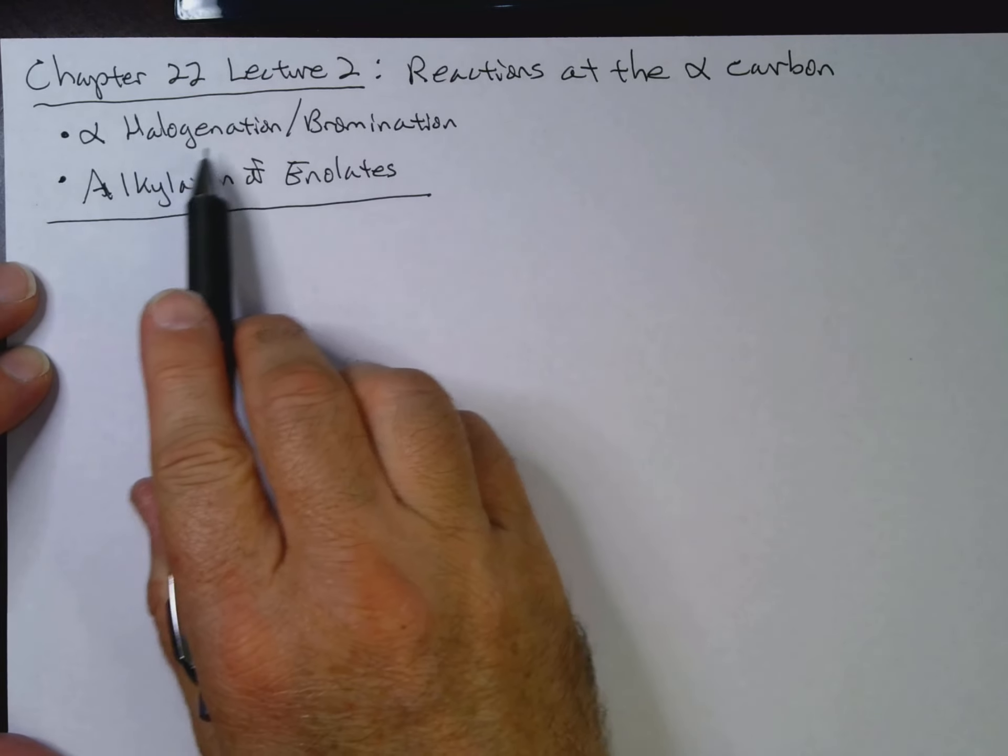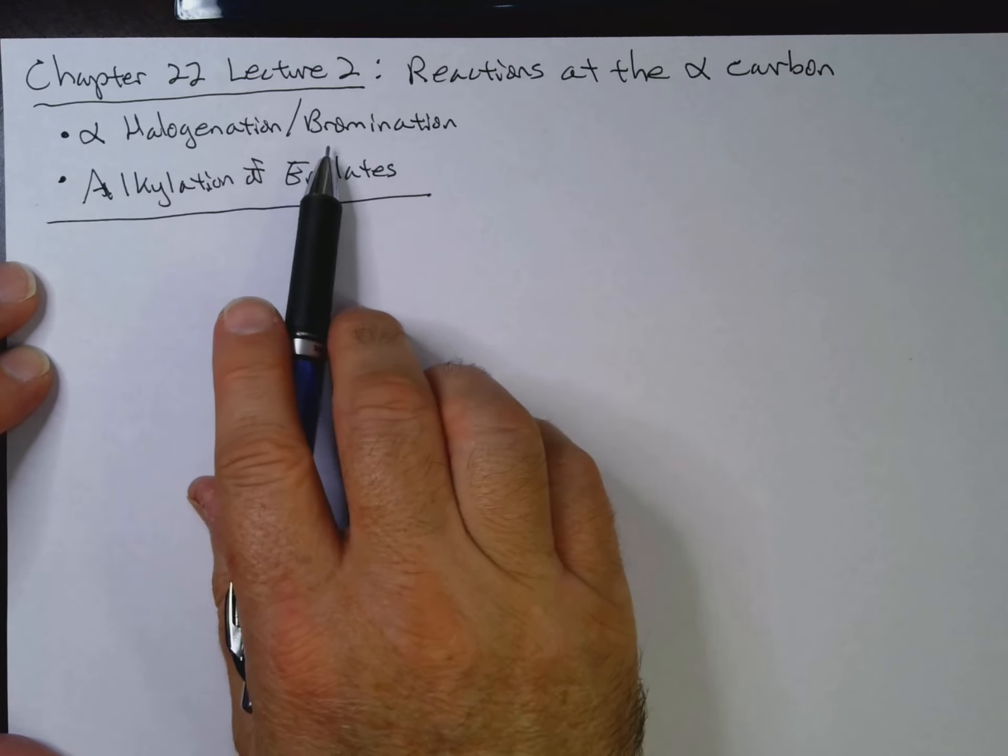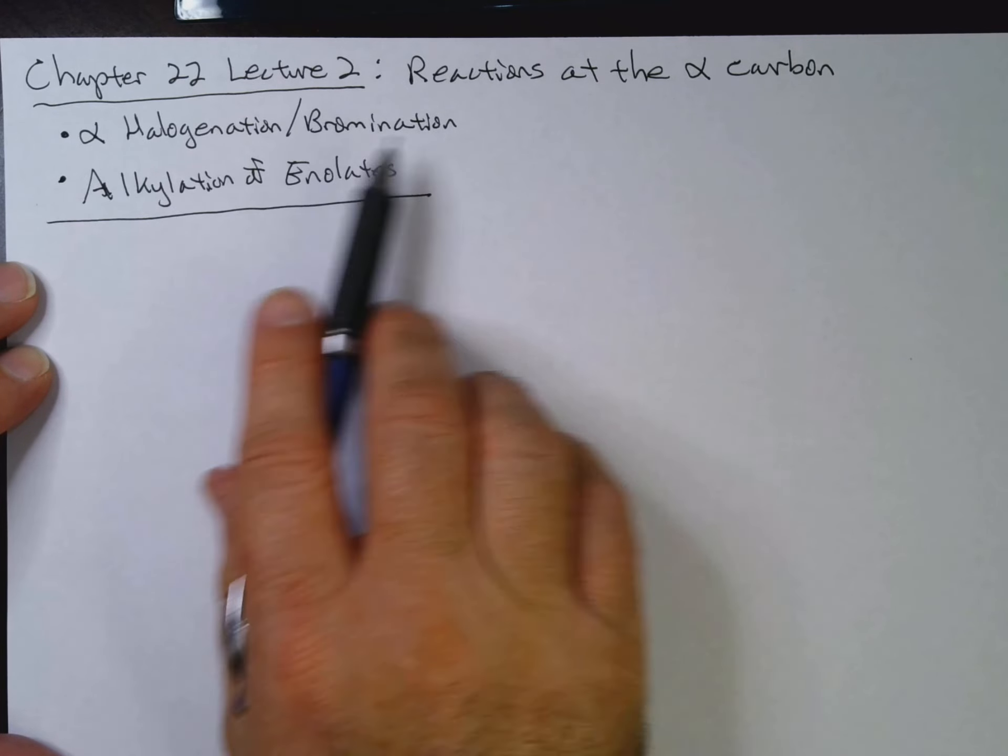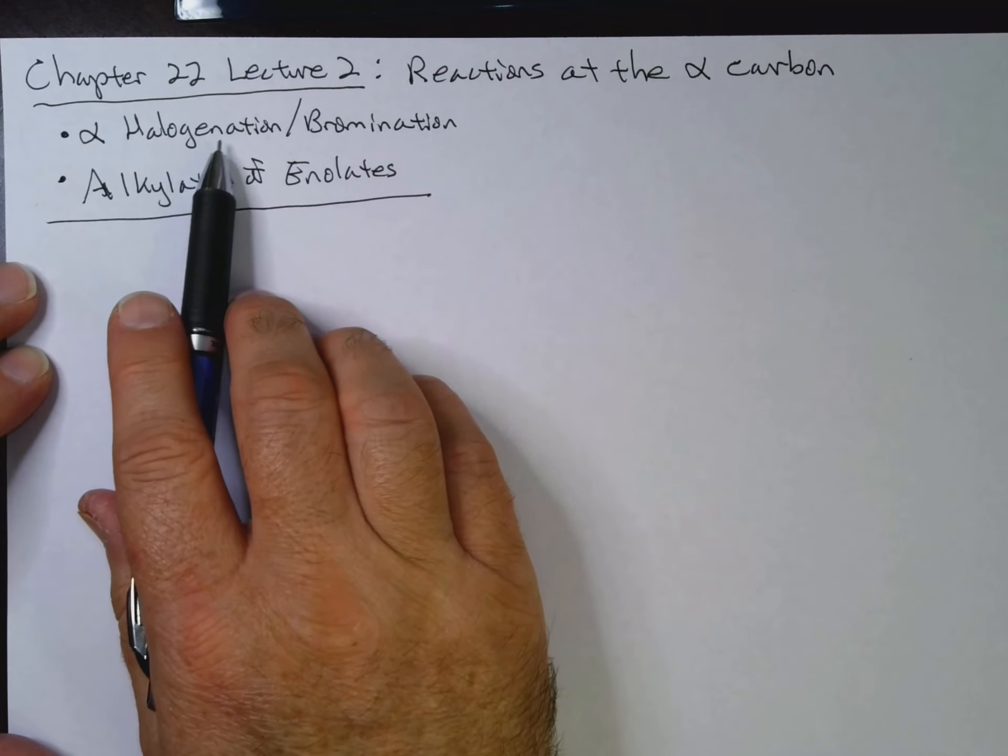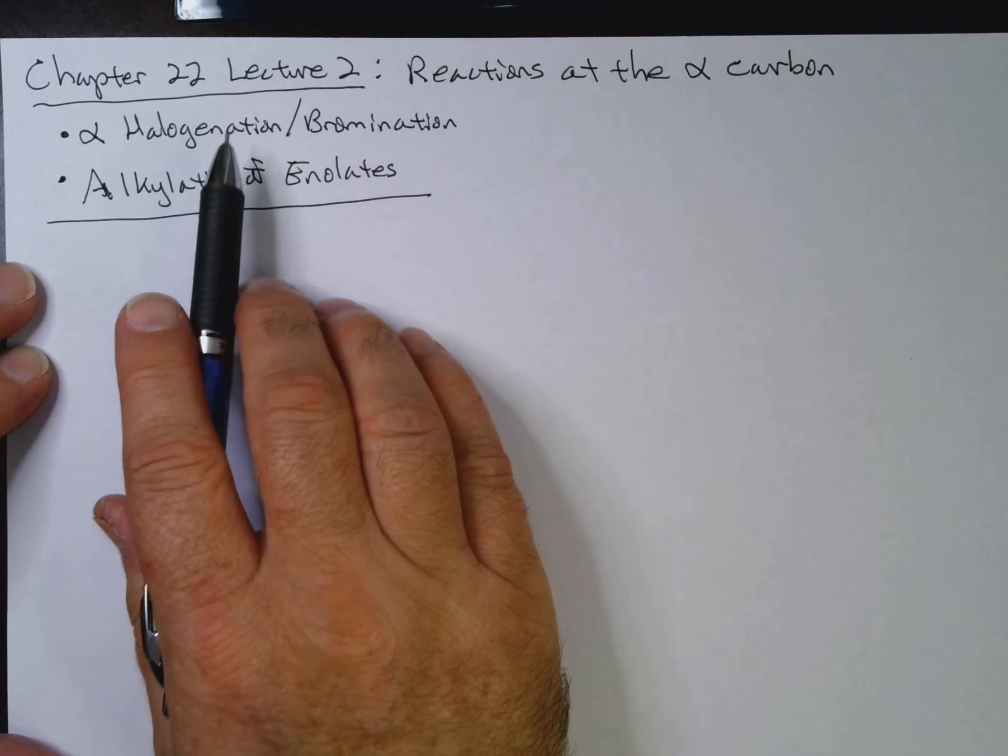In particular, we'll look at alpha halogenation. In particular, alpha bromination, you can do alpha chlorination or alpha iodination.